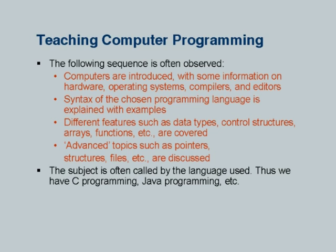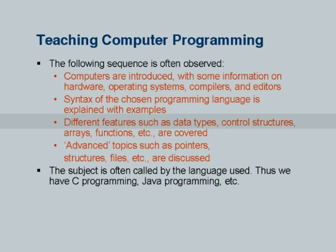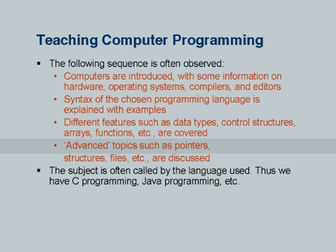Consequently, our students are not fully aware of the underlying concepts. Yet, because they are smart, they are able to learn to use these sort of mechanically. Then we proceed with description of the syntax of the chosen programming language, which we explain with examples. We introduce different features such as data types, control structures, arrays, functions, etc., and then the so-called advanced topics. Typically in a C programming course, these would include pointers, structures, files, etc.